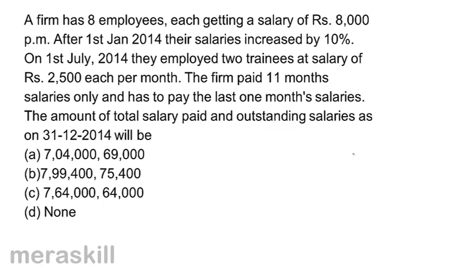A firm has 8 employees, each getting a salary of 8,000 per month. After 1st January 2014, their salaries increased by 10%. On 1st July 2014, they employed 2 trainees at a salary of 2,500 per month. The firm paid 11 months' salary only and has to pay the last 1 month's salary. The amount of total salary paid and outstanding salaries as on 31-12-2014 will be: A, 7,74,000 and 69,000; B, 7,99,400 and 75,400; C, 7,64,000 and 64,000; or D, none.